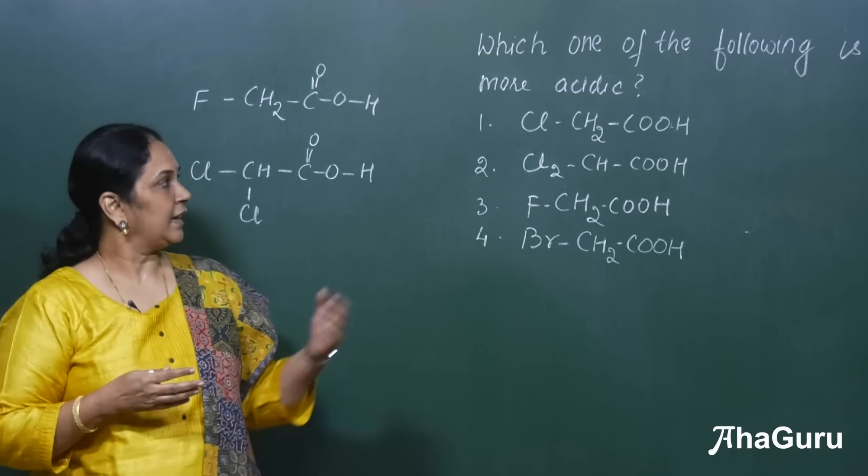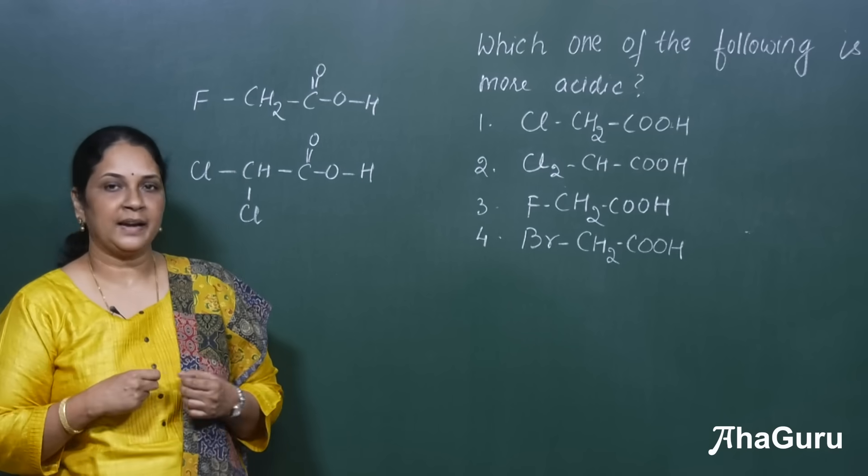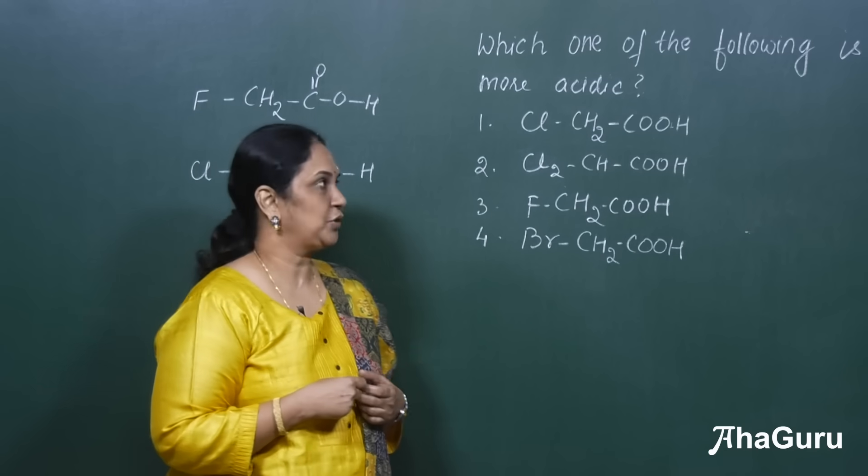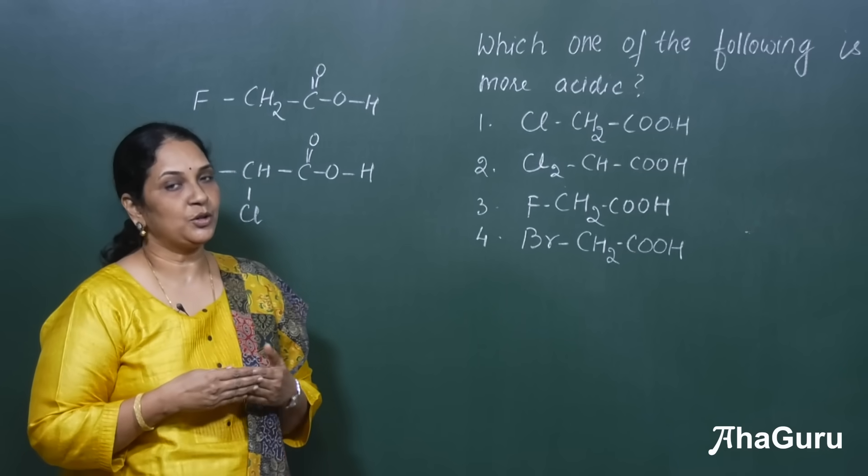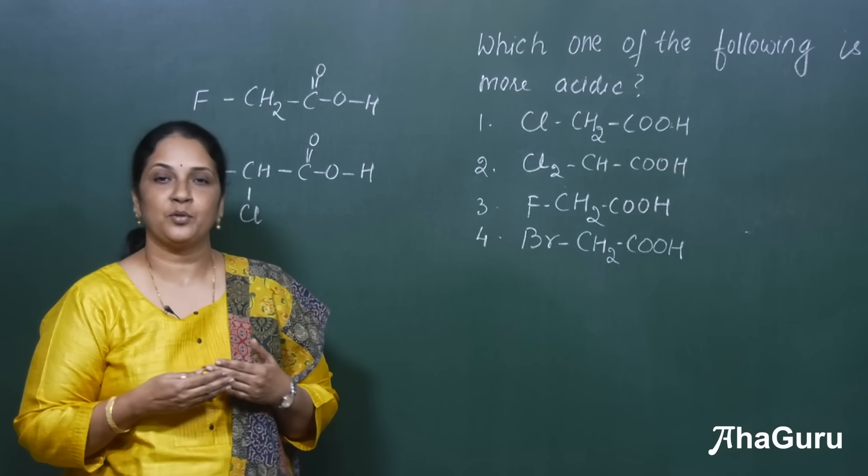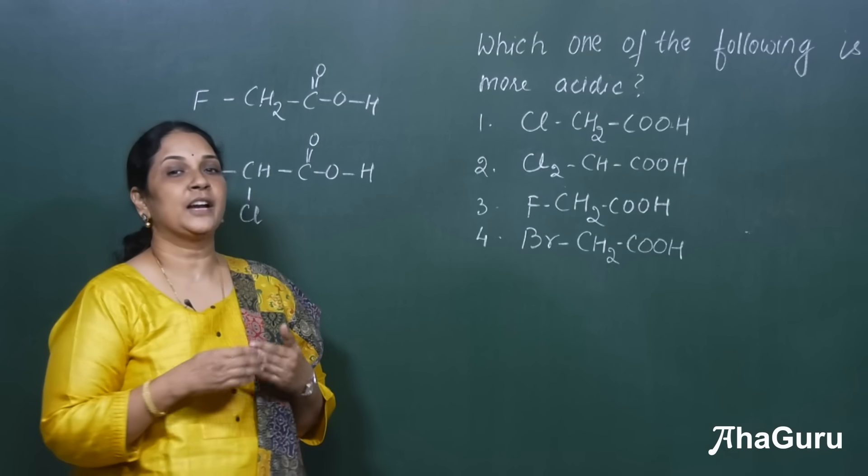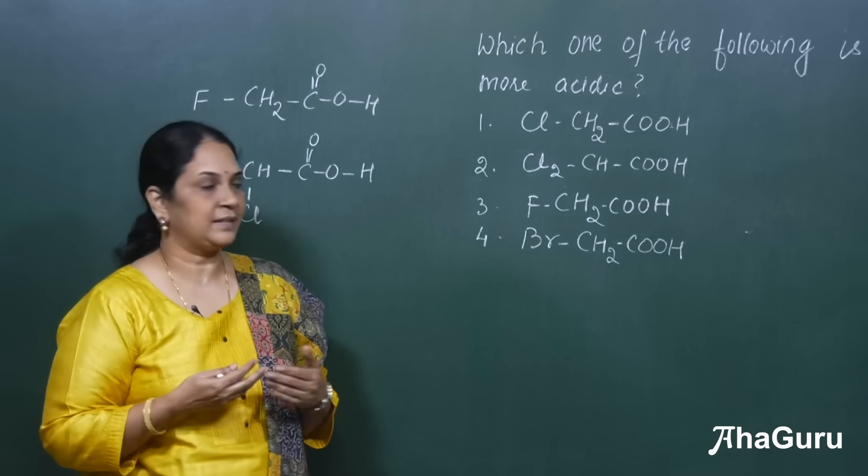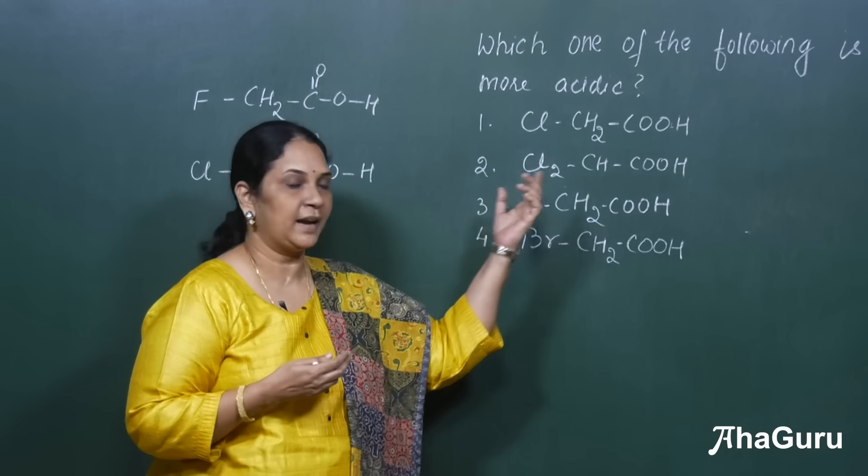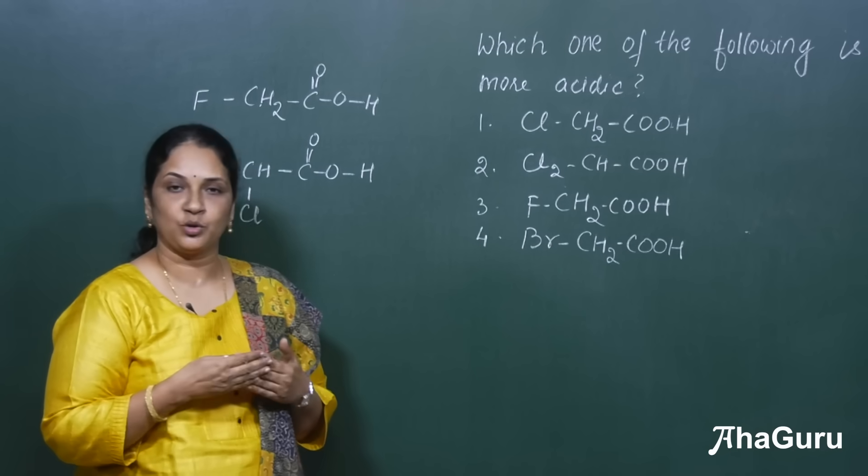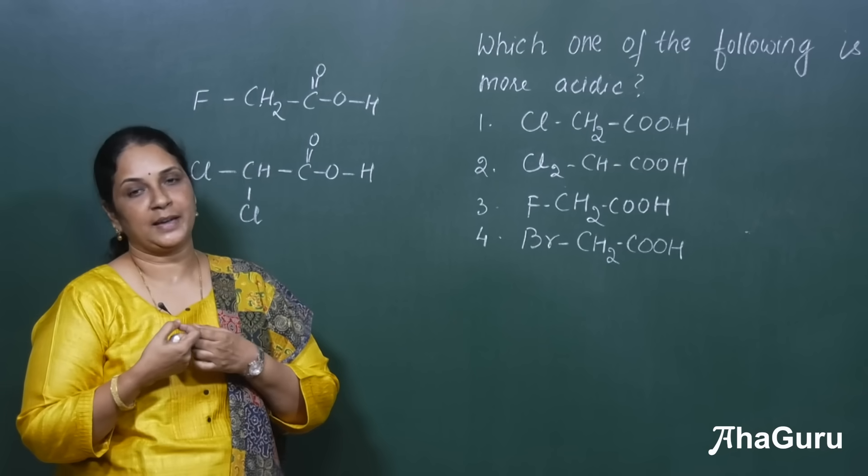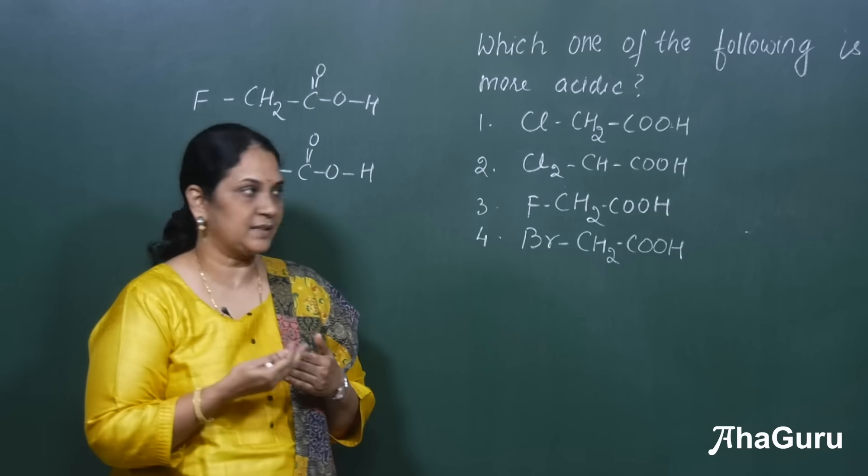So now here in this, let me take one example and explain. So here this is a competitive exam question: which one of the following is more acidic? As I've already told you, in this chapter you will be studying about inductive effect. So if there are more minus I effects, that is like chlorine, bromine, iodine, and fluorine, if you have more such groups, then they have more electron withdrawing capability and it can be more acidic.